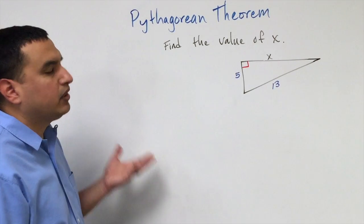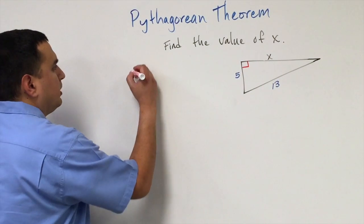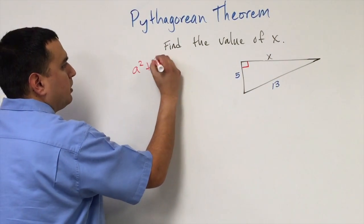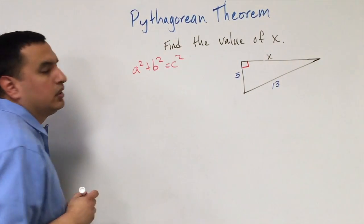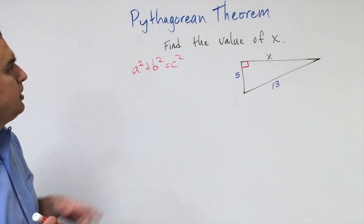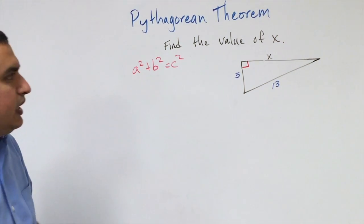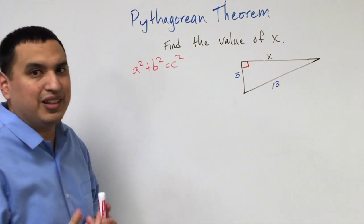This lesson starts with the Pythagorean theorem, which is a squared plus b squared equals c squared. This example wants us to find the value of x, which happens to be one of the legs.